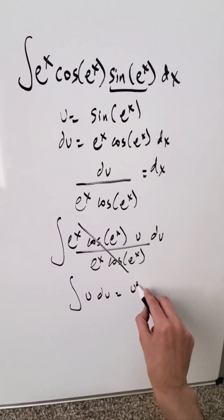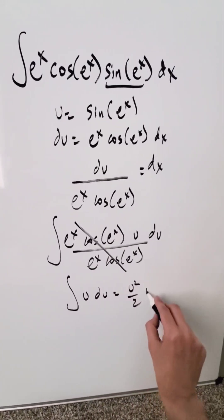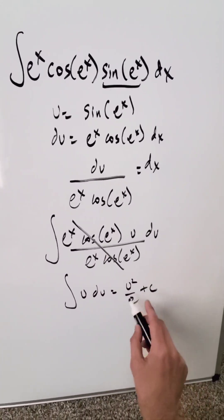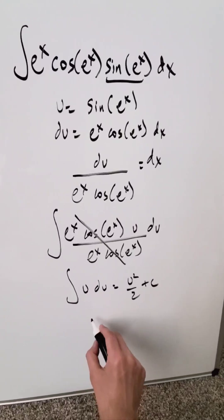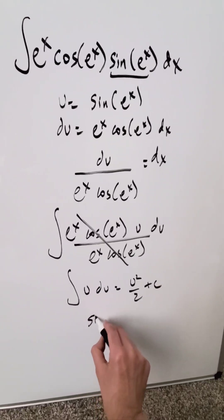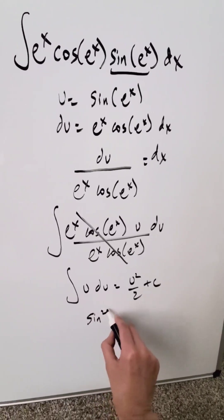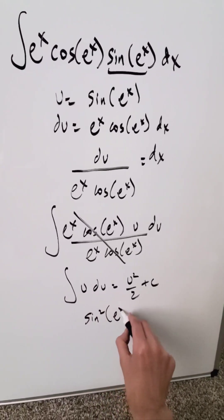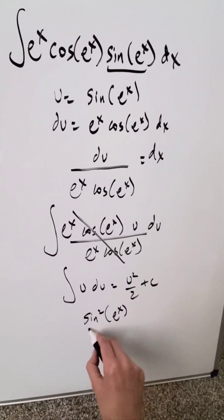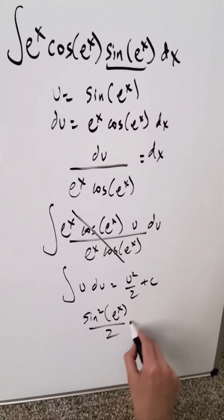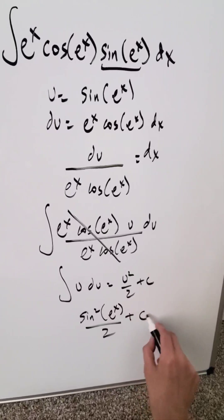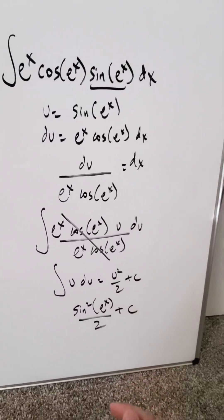And you know from here you have u squared over 2 plus C. Resubstitute u: your end result is sine squared of e exponent x divided by 2 plus C, and it will be right.